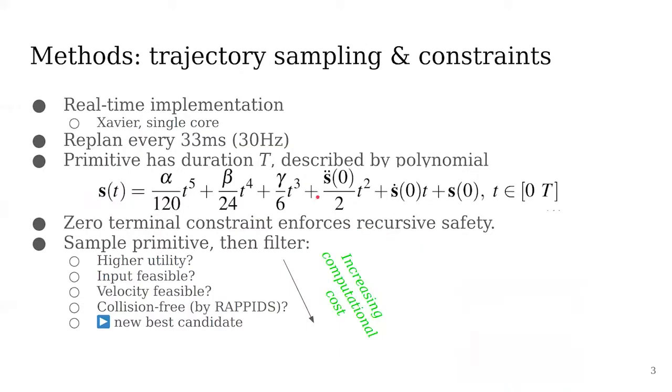Our planner is based on random sampling of trajectories and imposing constraints on those trajectories. This is possible as a real-time implementation on NVIDIA Jetson Xavier with a single core. The planning is done every 33 milliseconds so we can re-plan for every new depth image.